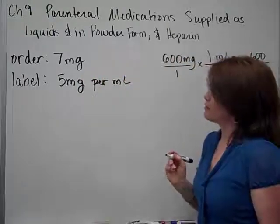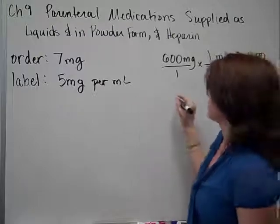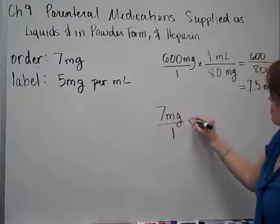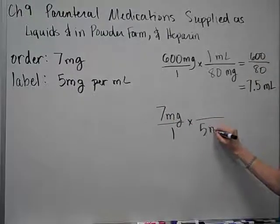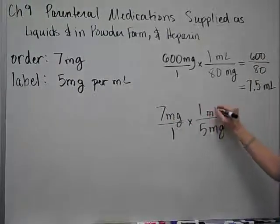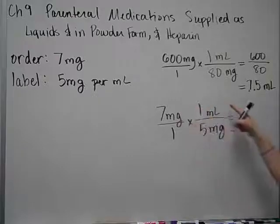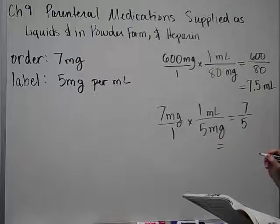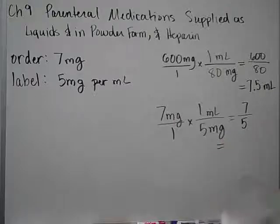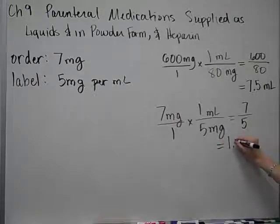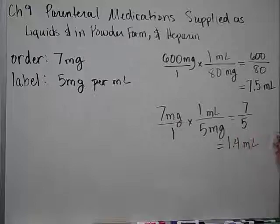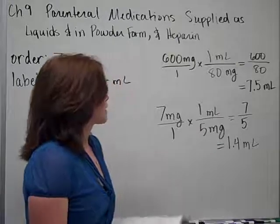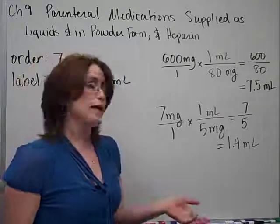If I use 5mg per milliliter, I can set up a quick dimensional analysis problem. Again, multiplying straight across the top, I have 7. Across the bottom, I have 5. My final answer turns out to be, when you use your calculator, 1.4 milliliters. But hopefully, you notice that this is just a dimensional analysis problem. Everything I've done has been very similar to the past.